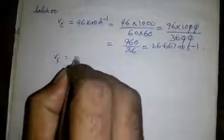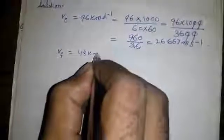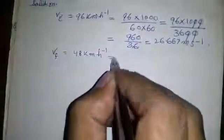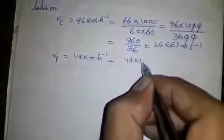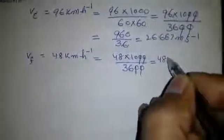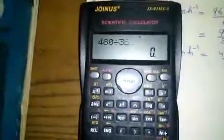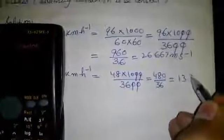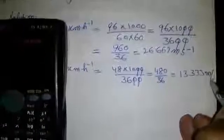Now its speed is reduced to 48 km per hour. Its final speed Vf is equal to 48 km per hour, which is equal to 48 into 1000 over 3600. Simplifying again, it becomes 480 over 36, and 480 divided by 36 is equal to 13.333 meter per second.